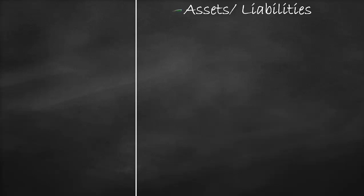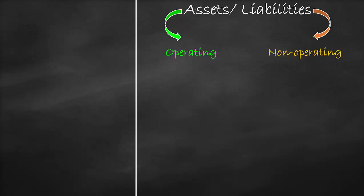We can classify assets and liabilities into operating assets and liabilities and non-operating assets and liabilities. Operating means used directly in operations, and non-operating means used indirectly in operations. In order to be able to classify each item as either operating or non-operating, we use a simple criteria.